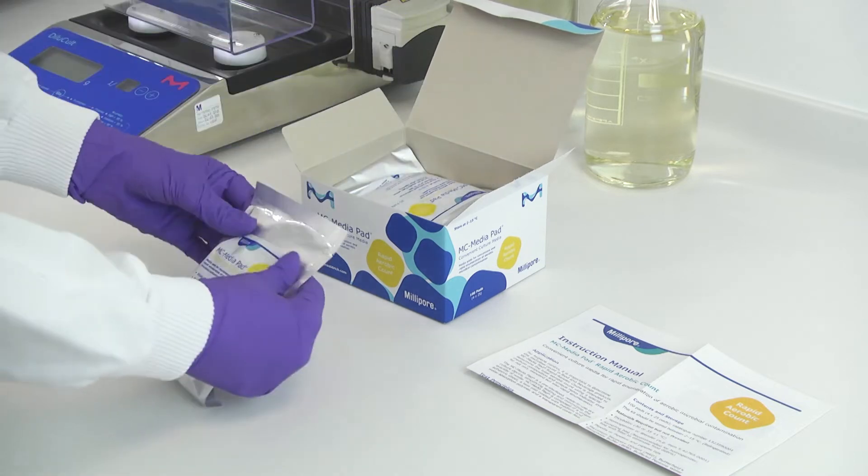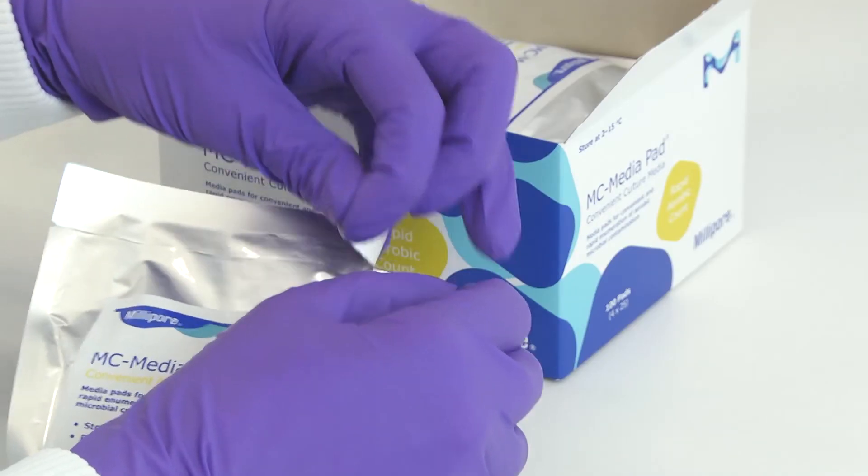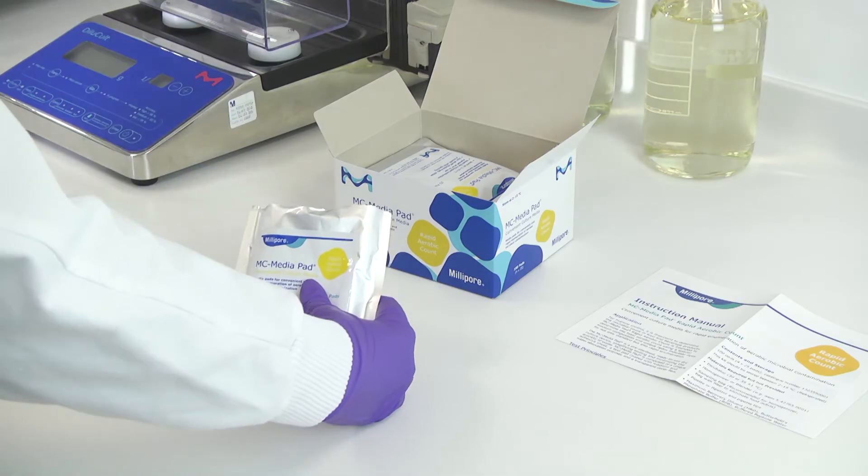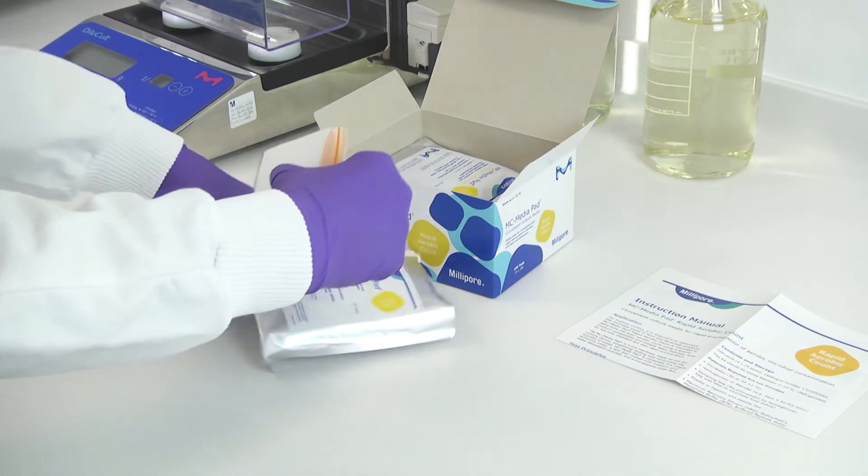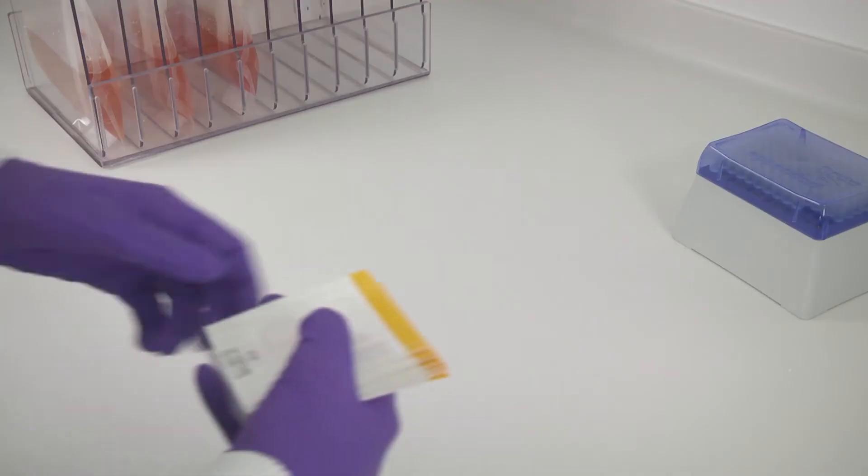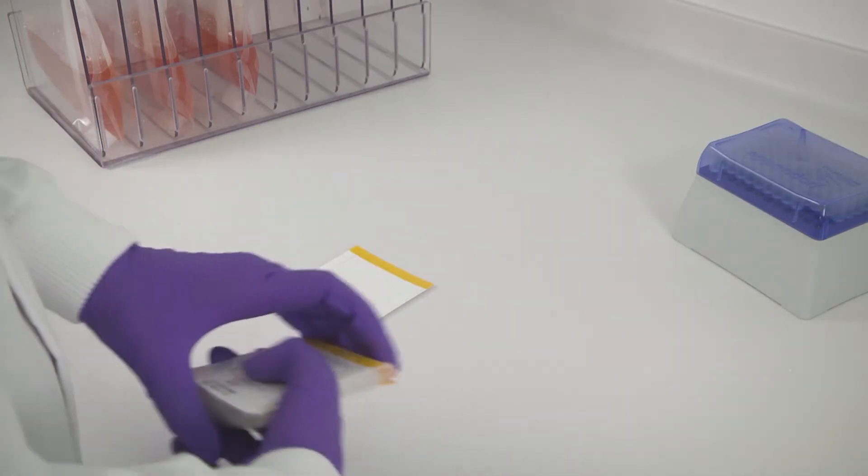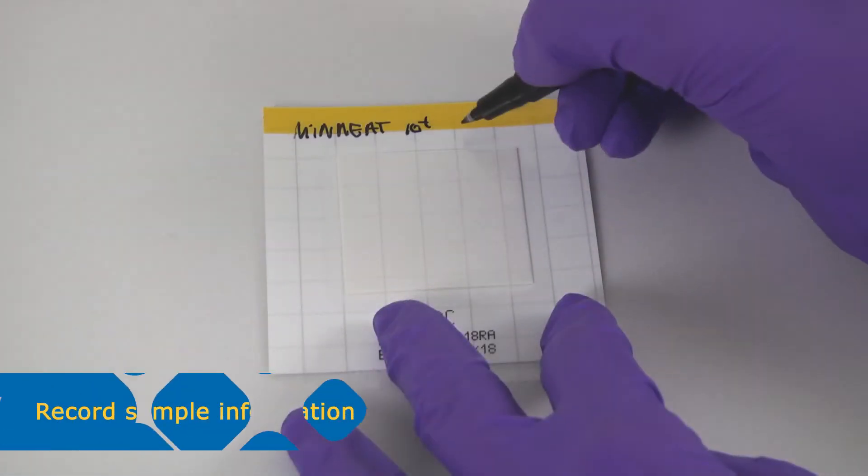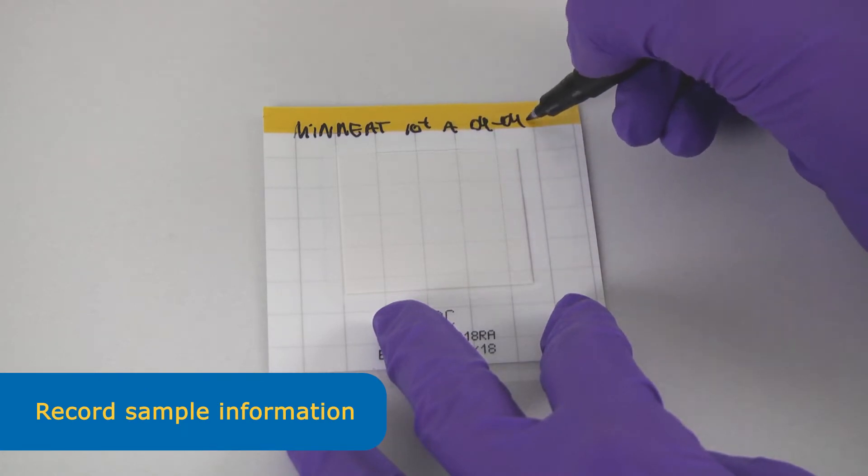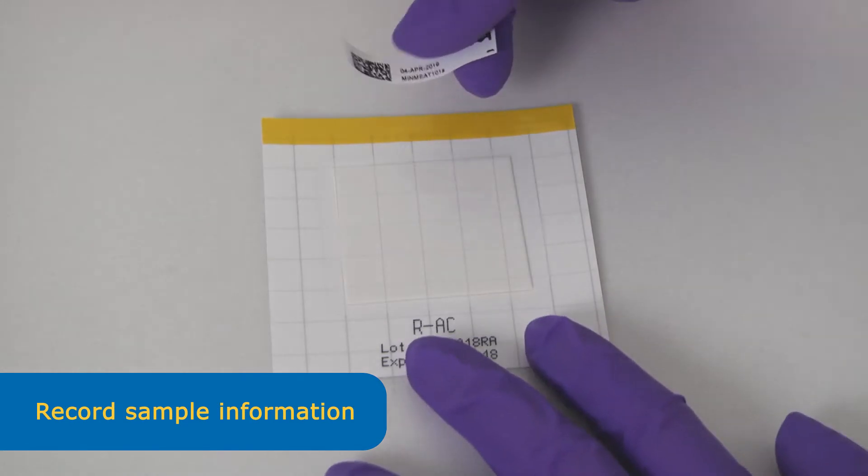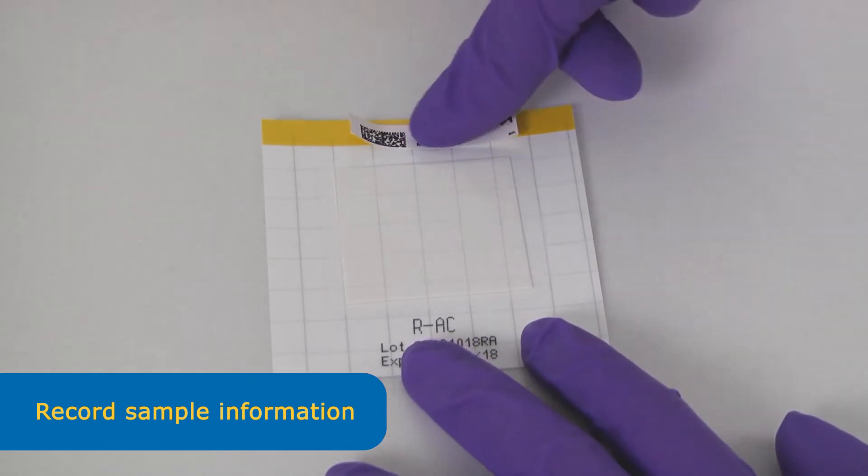The MC MediaPad workflow comprises 4 easy steps. To start the testing, take the pad out of the bag and place it on the bench. You have space on each pad to write sample information or attach an adhesive barcode label.